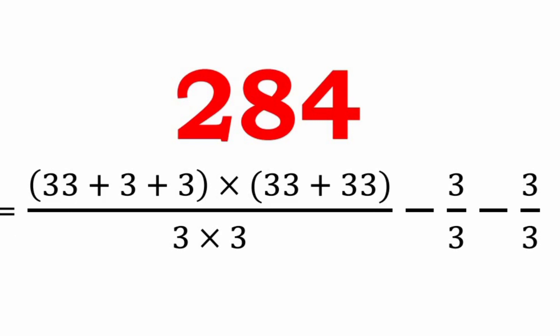The third single-digit representation of 284 is: (33 plus 3 plus 3 plus 3 into 33 plus 33) divided by (3 into 3 minus 3/3 minus 3/3). In this representation only the digit 3 is used.